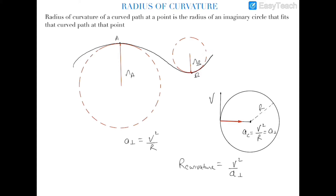The radius of curvature is the radius of that circle which just gets fitted into the curved path at some point. If this is a point A and we need to find out the radius of curvature of the curved path at point A, we can imagine a circle of radius r_A which just fits into this curved path at point A. The radius of this circle will be the radius of curvature of the curved path at point A.